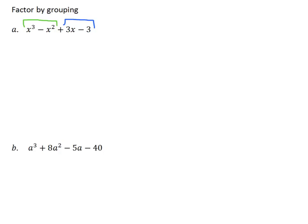When I take a look at x cubed and x squared, what can I take out of both of them? We can take out an x squared. I open my parentheses and divide each term by x squared. x cubed divided by x squared is just x, and x squared divided by x squared gives us a minus 1.